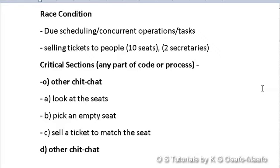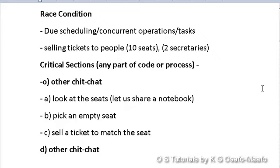If two or more secretaries look at the seats at the same time, they could both say 'I have one seat available' and each go ahead to sell a ticket — causing a conflict. The strategy is that only one person at a time can look at the seat, pick an empty seat, and sell the ticket. In real life, a shared notebook containing available seats could be used — you check off a seat and then sell the ticket.